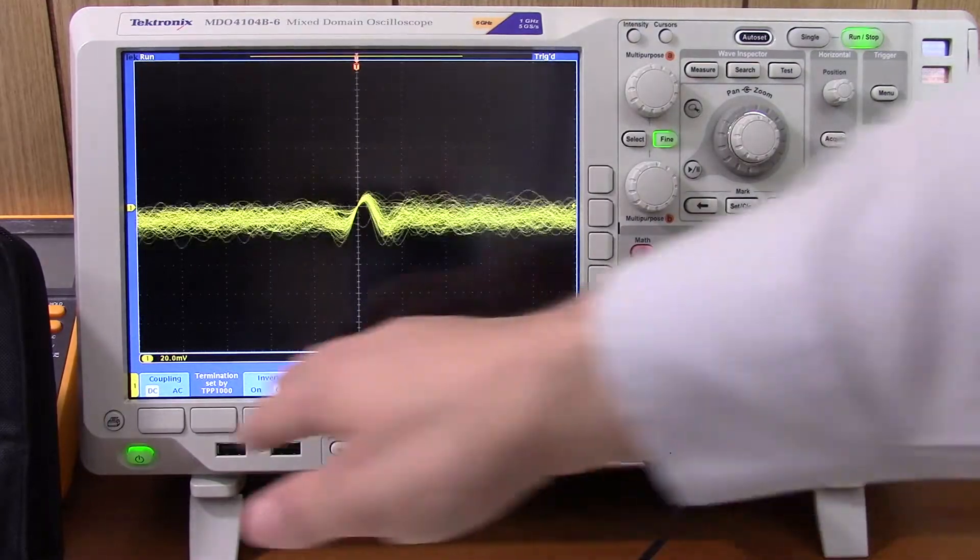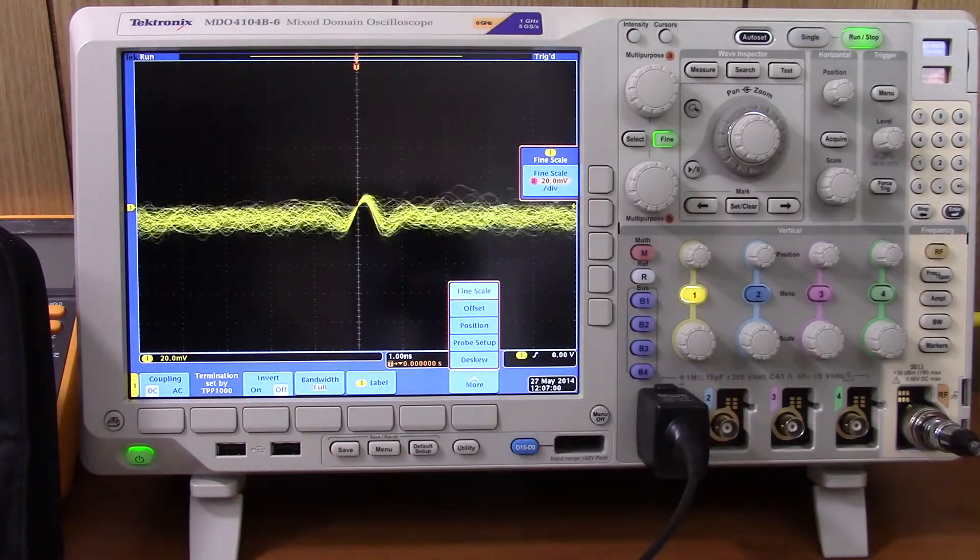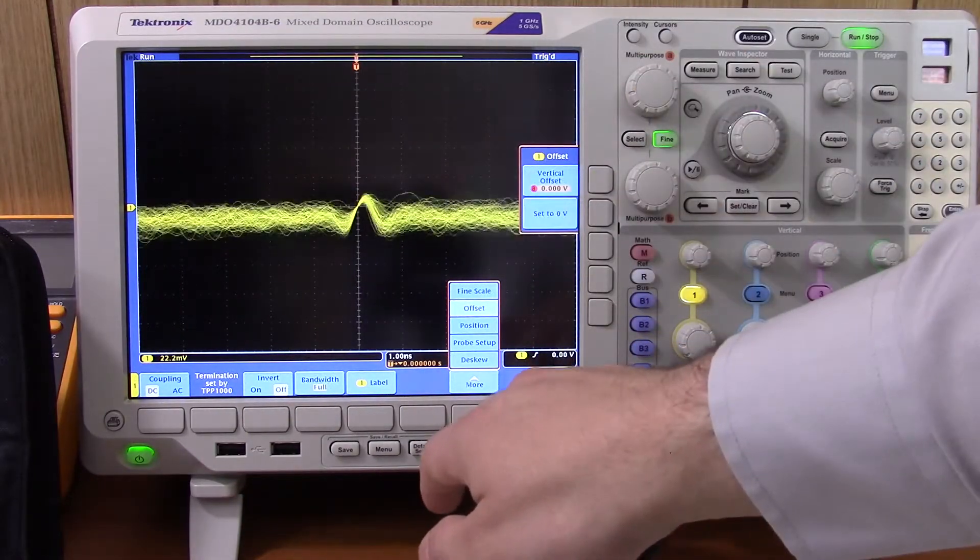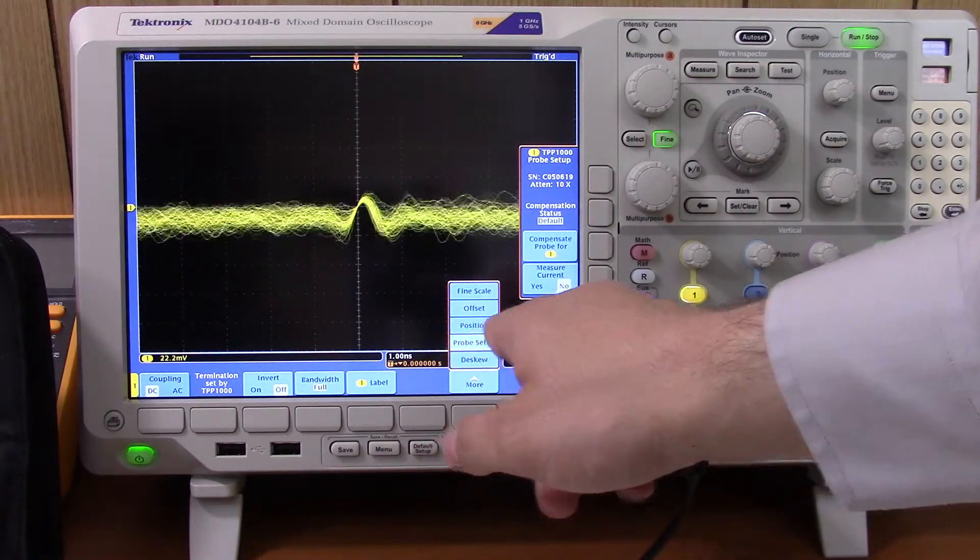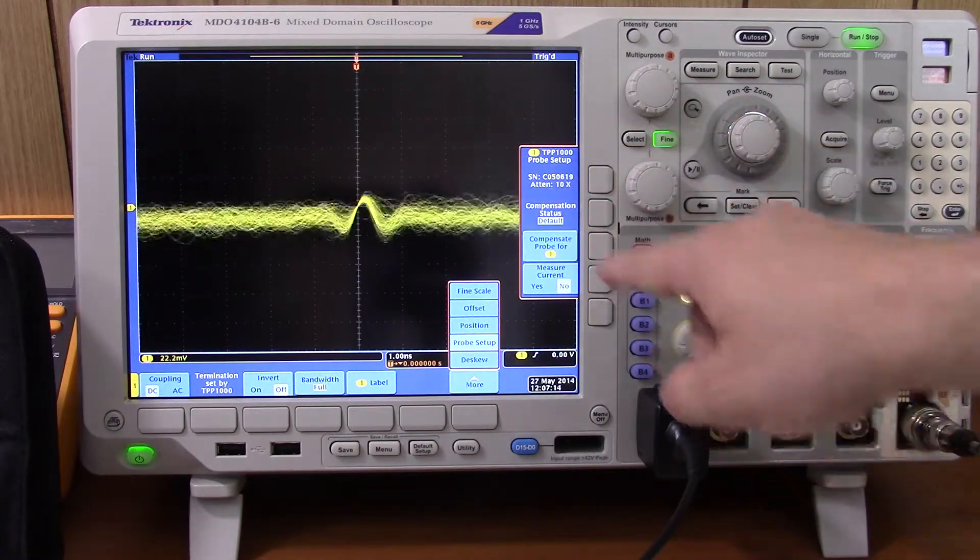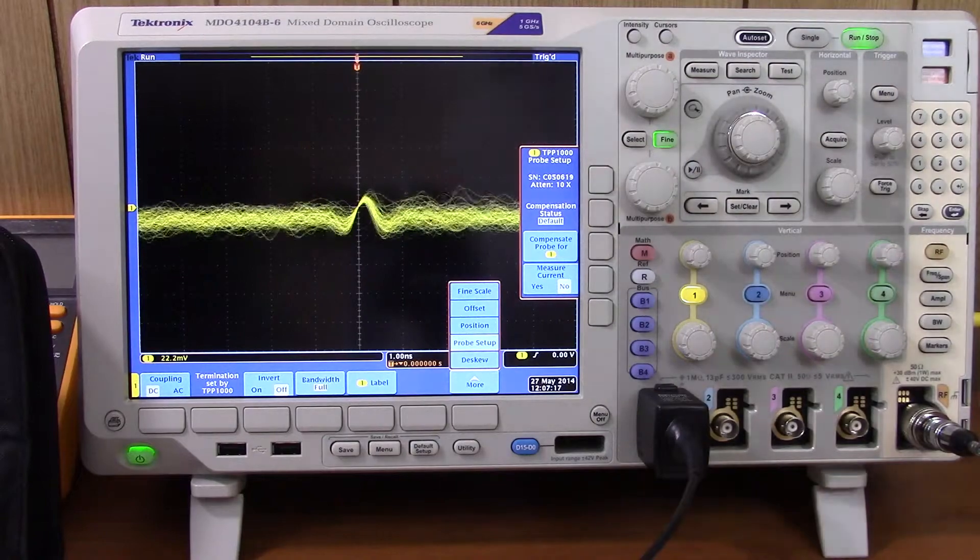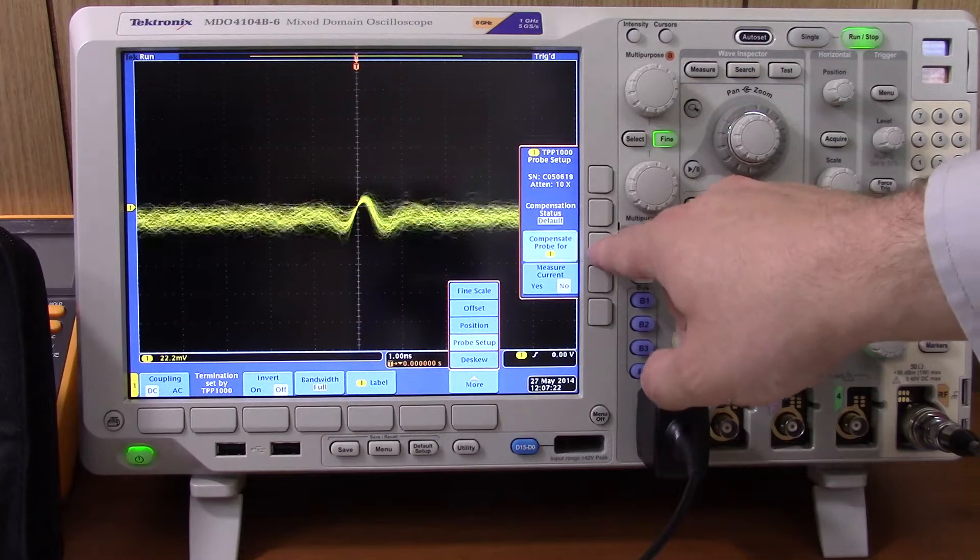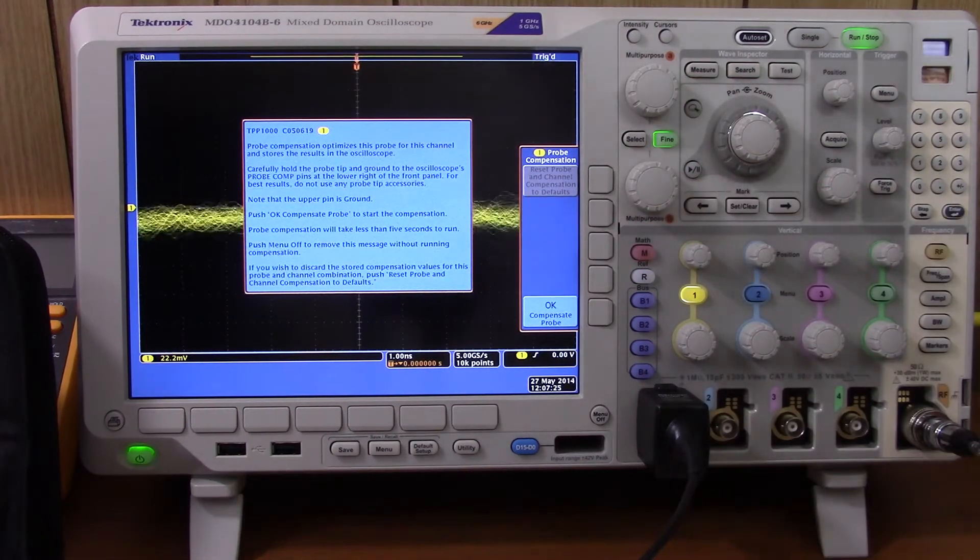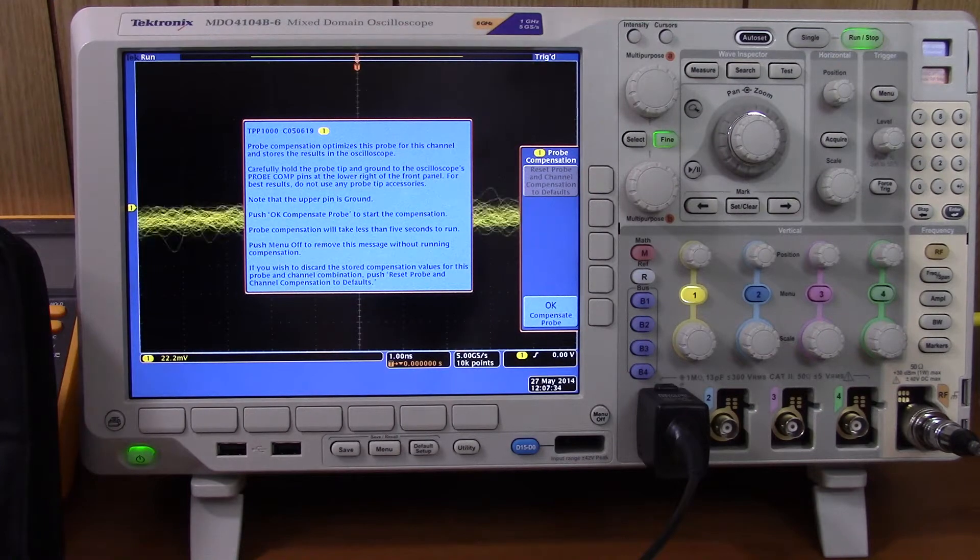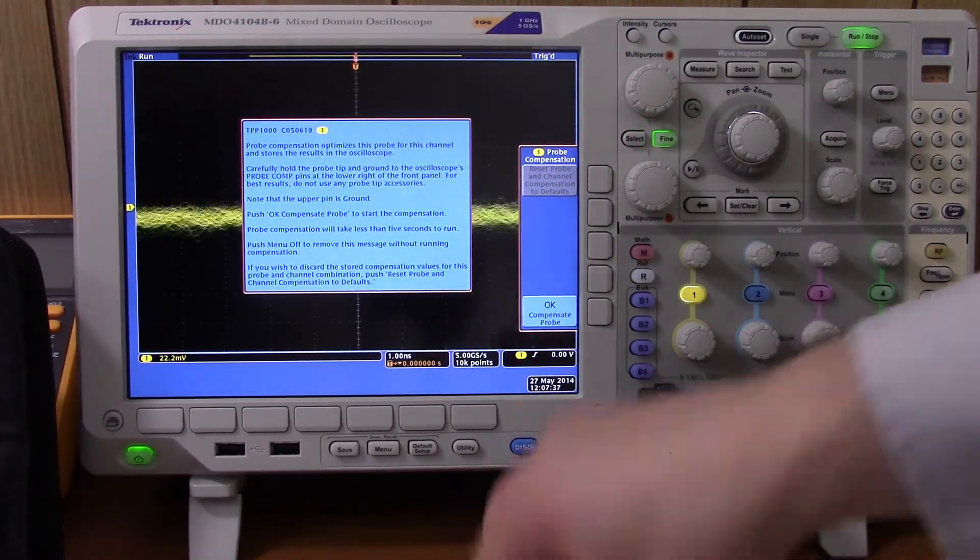Anyway, this is not what we're here for. So let me try to figure this out. So we are in the channel 1 menu. We're going into more. We're not using that button up there. We're going down here. Probe setup. And it says the probe up here is the serial number, 10 times attenuation. And it says compensation status default because I have never compensated this probe. So I guess if I hit this button, it will compensate.